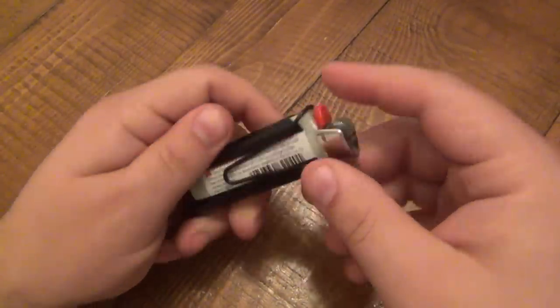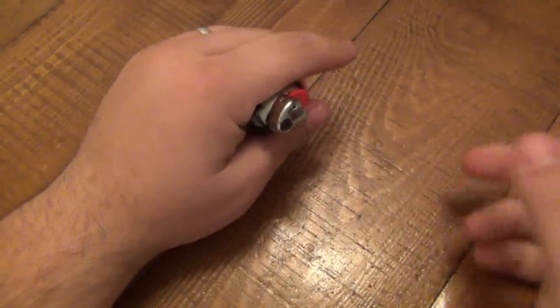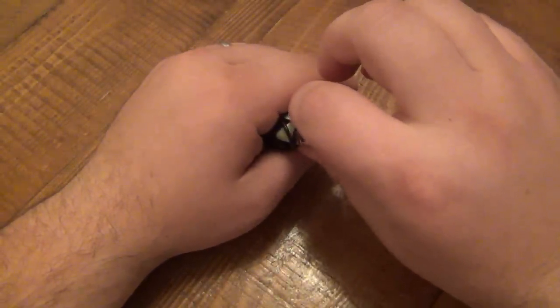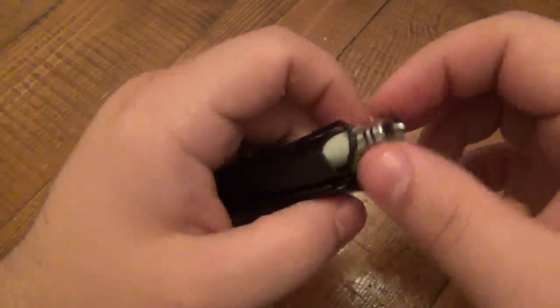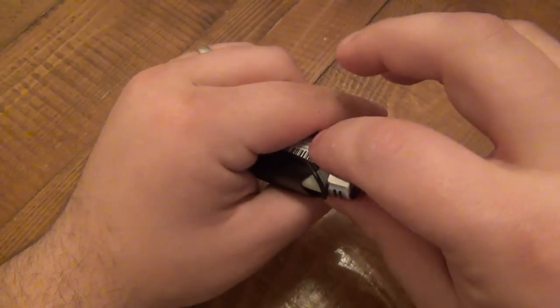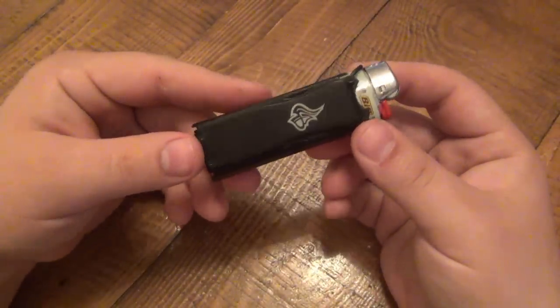So basically when this is in my pocket, the only thing that's exposed is this. What I'll do is I'll grab the whole lighter by the top, not by the metal piece here because that could pull off, but just grab the actual lighter and pull up. It's not going to pull out of its case. I haven't had it happen yet.